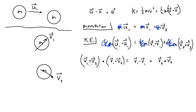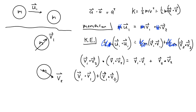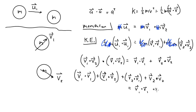The dot product is a form of multiplication, so we can apply FOIL to the left side. That gives: first — v1 dot v1; outer — v1 dot v2; inner — v2 dot v1; last — v2 dot v2. This equals v1 dot v1 plus v2 dot v2 on the right.